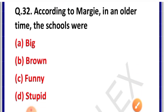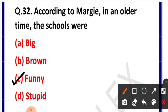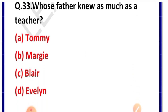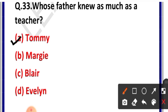Question number 32: According to Margie, in an older time the schools were... Question number 33: whose father knew as much as a teacher? Options: A. Tommy, B. Maggi, C. Blair, D. Evelyn. Correct answer is option A — Tommy. Tommy ke father bahut kuch jaante the jitna ki ek teacher jaanta hai.